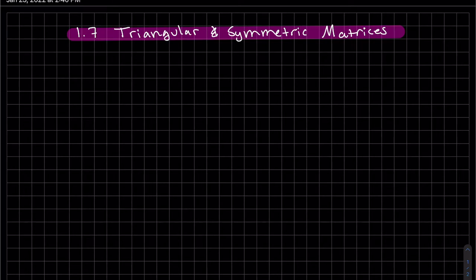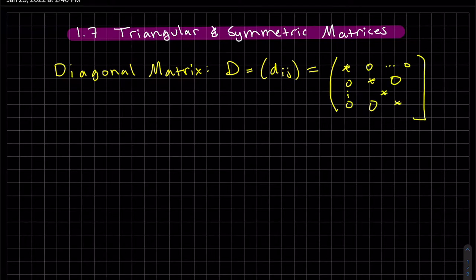So we're going to talk about triangular and symmetric matrices today. We're going to start off with the diagonal matrix. So pretty much, the diagonal matrix only has entries in the diagonal.